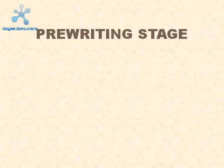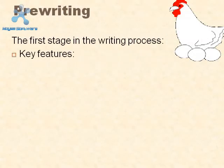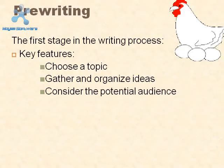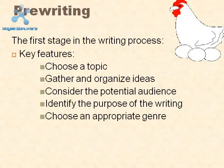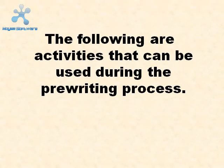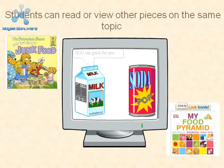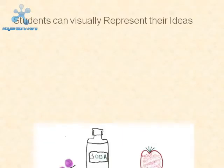The pre-writing stage. Pre-writing is the first stage in the writing process. Key features: choose a topic, gather and organize ideas, consider the potential audience, identify the purpose of the writing, and choose an appropriate genre. Activities include reading or viewing other pieces on the same topic, listening to a story about the topic, and visually representing ideas.